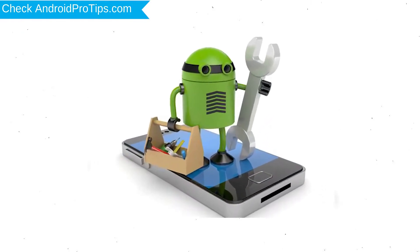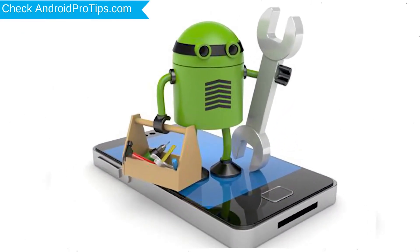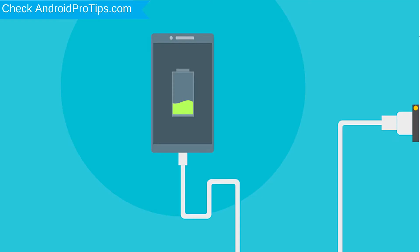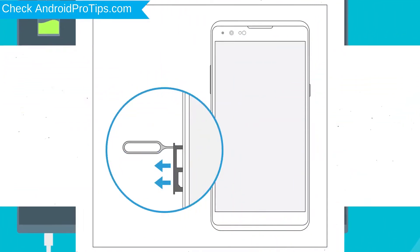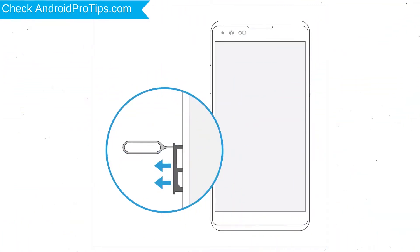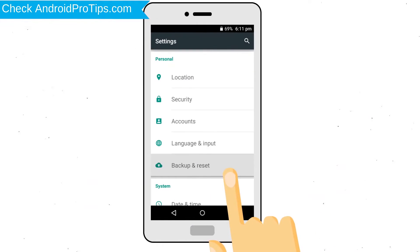Before resetting your mobile, your mobile battery must be above 50%. Remove SD cards and SIMs. Back up your Android mobile data if possible.